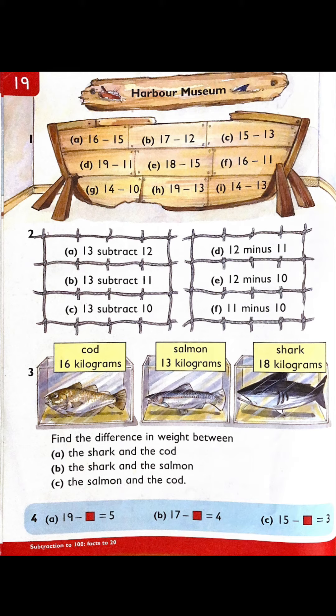The last one, number four, is when you're finding out the missing numbers. You can count on from the answer. So for example, 4a is 19 take away what equals 5. You can count on from 5 to 19 or you can use your number line to figure out the missing number.